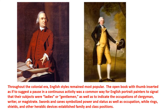Throughout the colonial era, English styles remained popular. The open book with thumb inserted, as if to suggest a pause in continuous activity, was a common way for English portrait painters to signal that their subjects were ladies or gentlemen, as well as to indicate the occupations of clergyman, writer, or magistrate. Swords and canes symbolized power and status as well as occupation, while rings, shields, and other heroic devices established family and class positions.